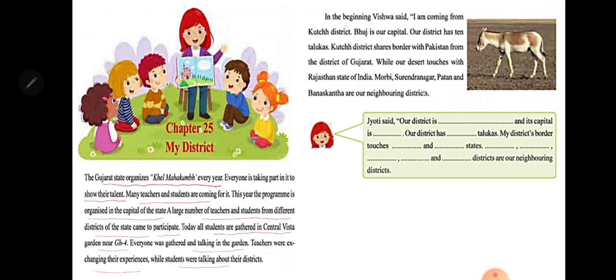In the beginning, Vishwa said: I am coming from Kutch district. Bhuj is our capital. Our district has 10 talukas. Kutch district shares a border with Pakistan, while our desert touches with Rajasthan state of India.